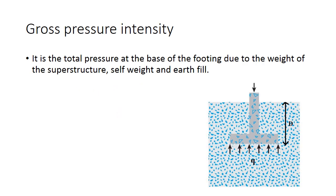Before going into detail about bearing capacity of soil, we need to look at two terms. The first is gross pressure intensity — it is the total pressure at the base of the footing due to the weight of the superstructure, self-weight of the footing, and the overburden pressure (earth fill). Gross pressure intensity is an overall combination of the weight of the superstructure, self-weight of the foundation, and the overburden pressure.